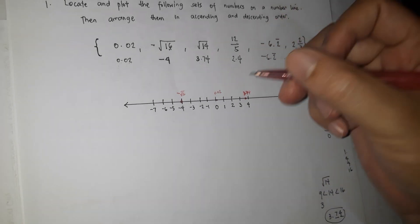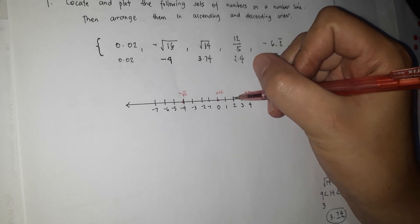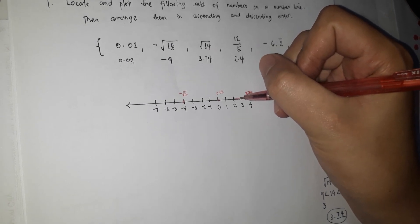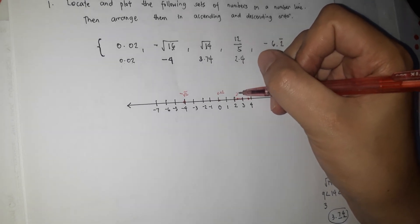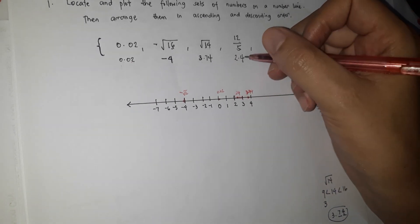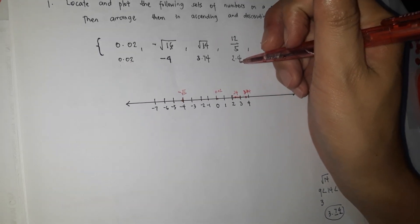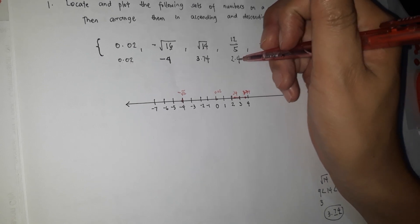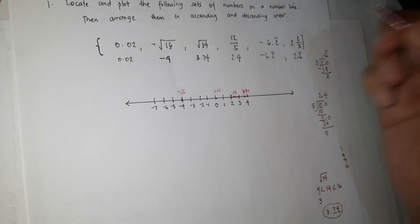Next, 2.4 — it comes after 2. If we divide the space between 2 and 3 into 10 equal parts, 2.4 falls at the 4th mark. So we plot 2.4 at that position on the number line.